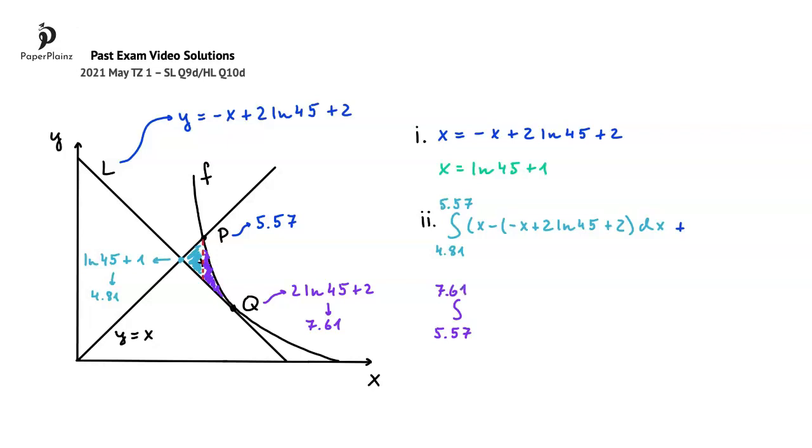When completing this integral, we once again have to subtract the lower bound from the upper bound, and the lower bound here is L, while the upper bound is f. So we can write f, so 90 e to the power of negative 0.5x, minus the lower bound, so negative x plus 2 ln 45 plus 2. We'll close the parentheses and write the dx at the end.